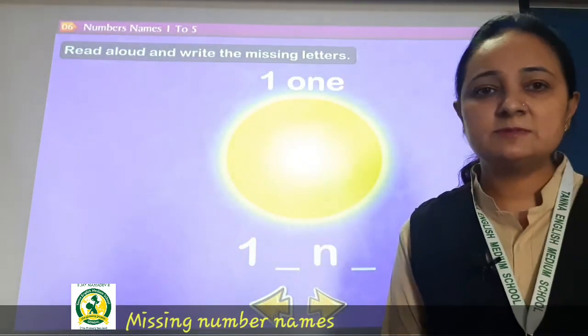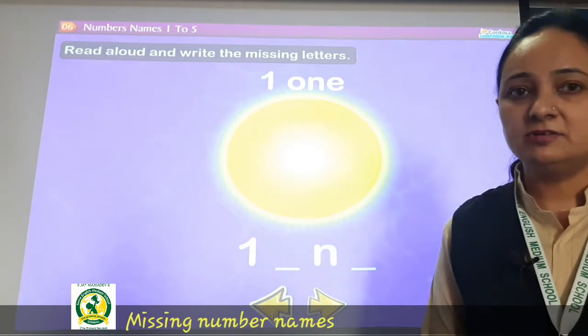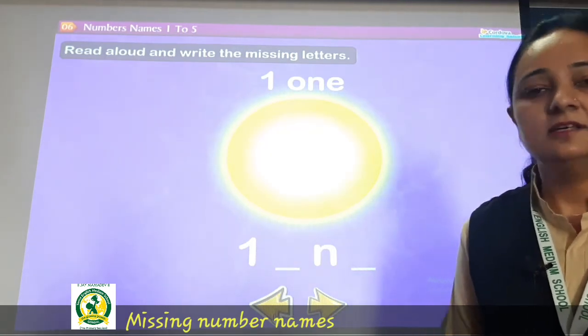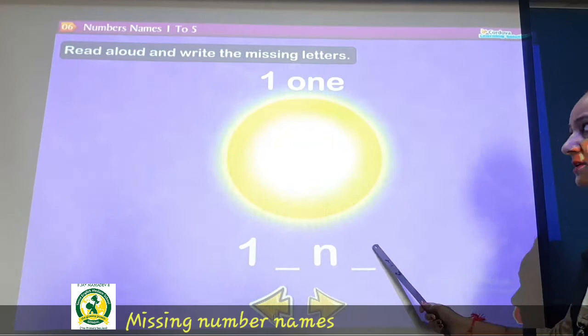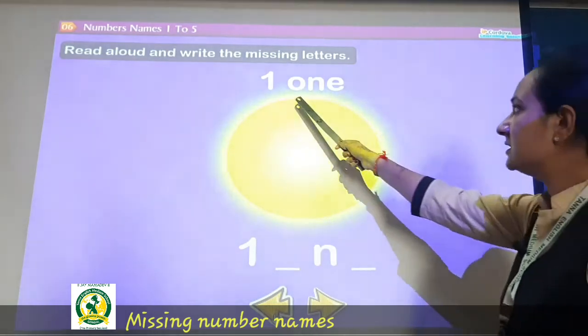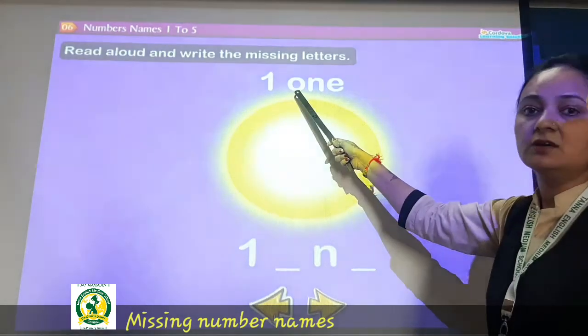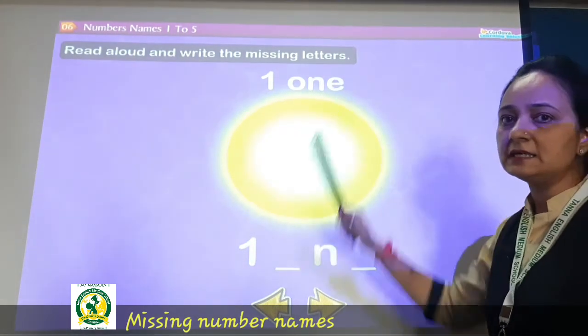So let me show you all the number names from 1 to 5. You have done this in your LKG session, right? So today we will do the same thing over here. See number 1 — the spelling of 1 has O and E.